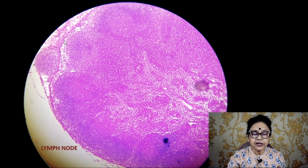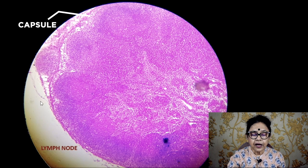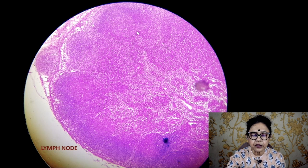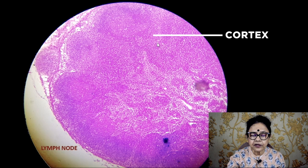In the lymph node, this is the capsule of the lymph node — this border — and beneath the capsule is also the capsule, because this part is torn away. You will visualize it like this: the white color area is the subcapsular space, and beneath the subcapsular space there is the cortex of the lymph node.